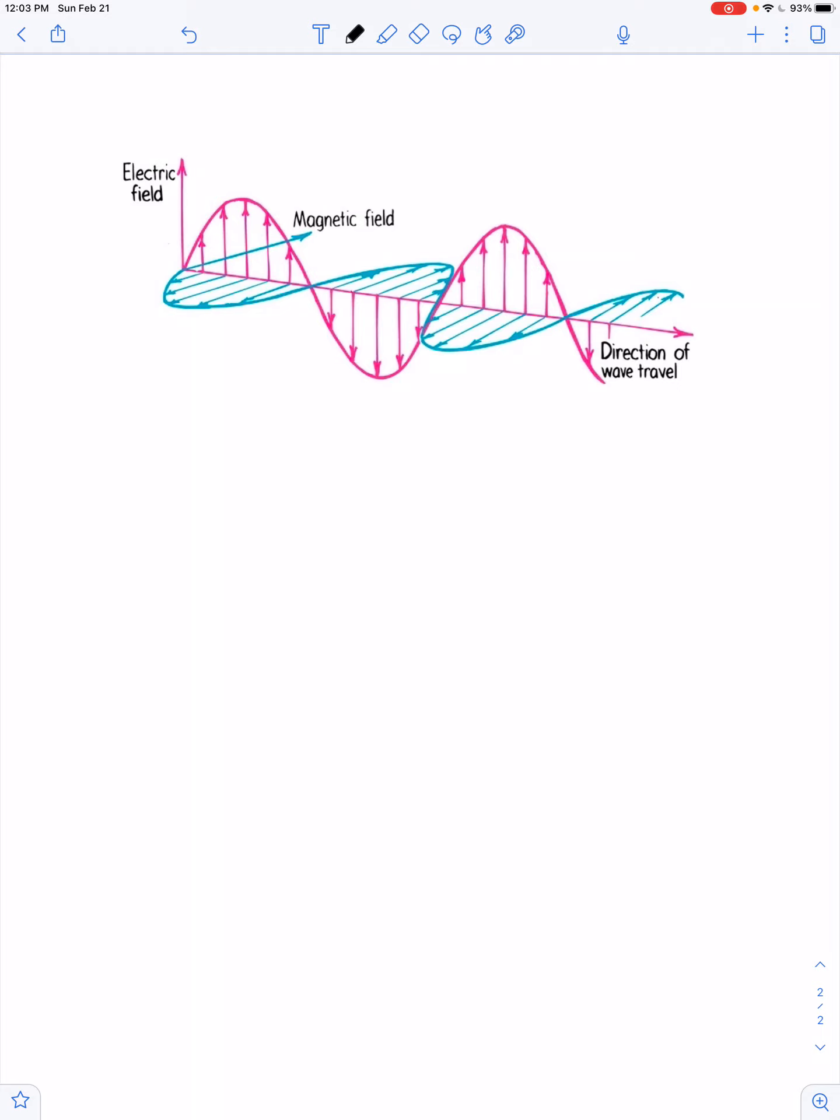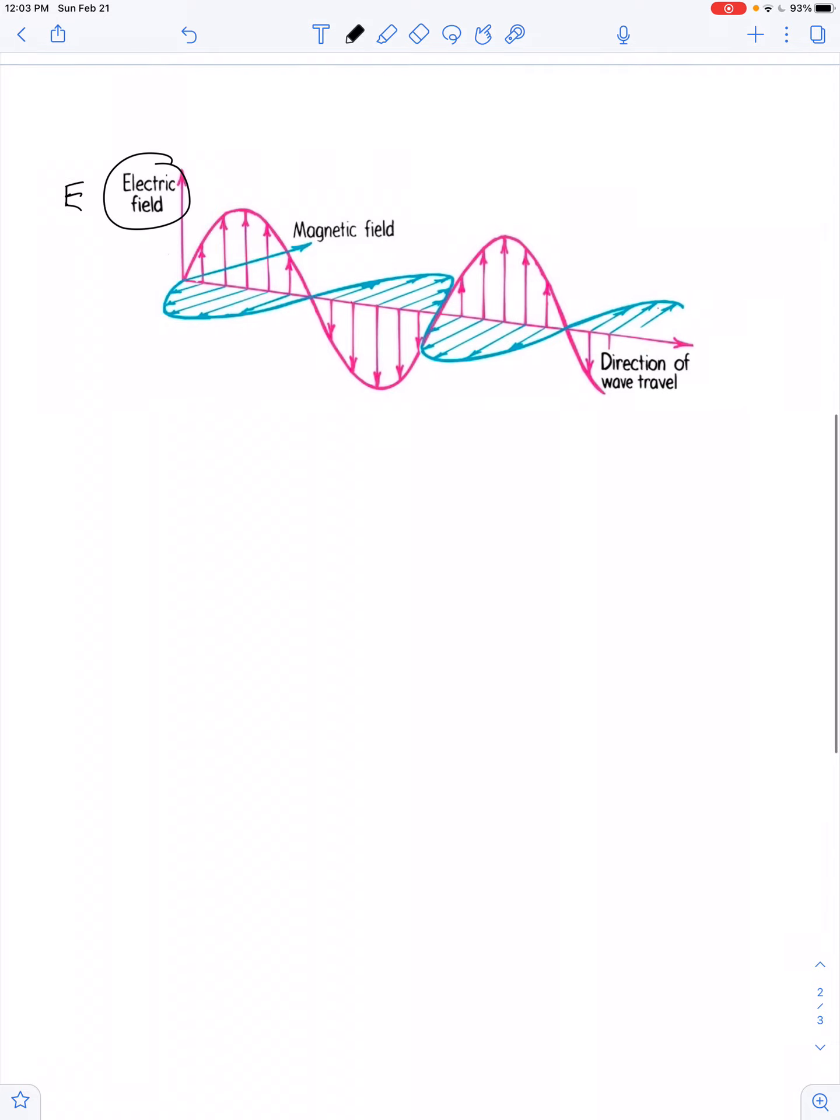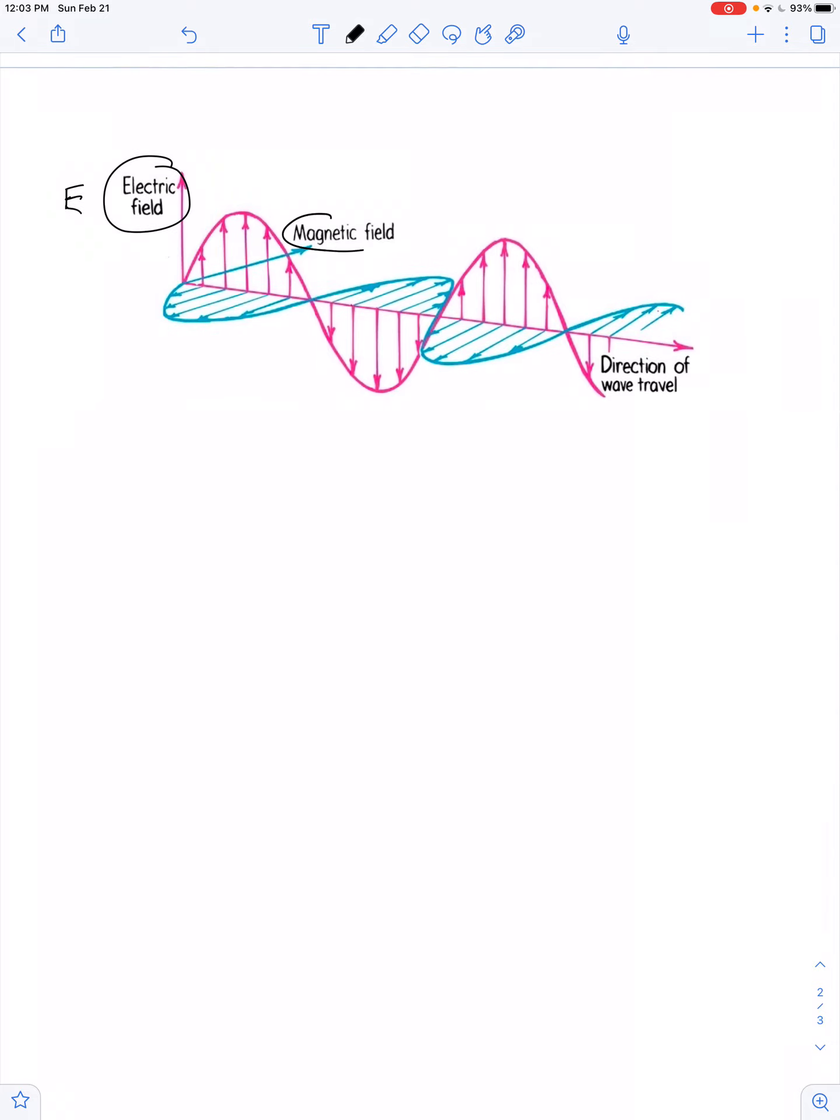Our eyes only tune into a small amount of it that we call visible light. And all of these share one thing in common. They're oscillating electric fields that are perpendicular to oscillating magnetic fields. Now, the symbol for magnetic field turns out is capital B. We can put this symbol over each of those to state that electric field and magnetic field are both vector quantities.